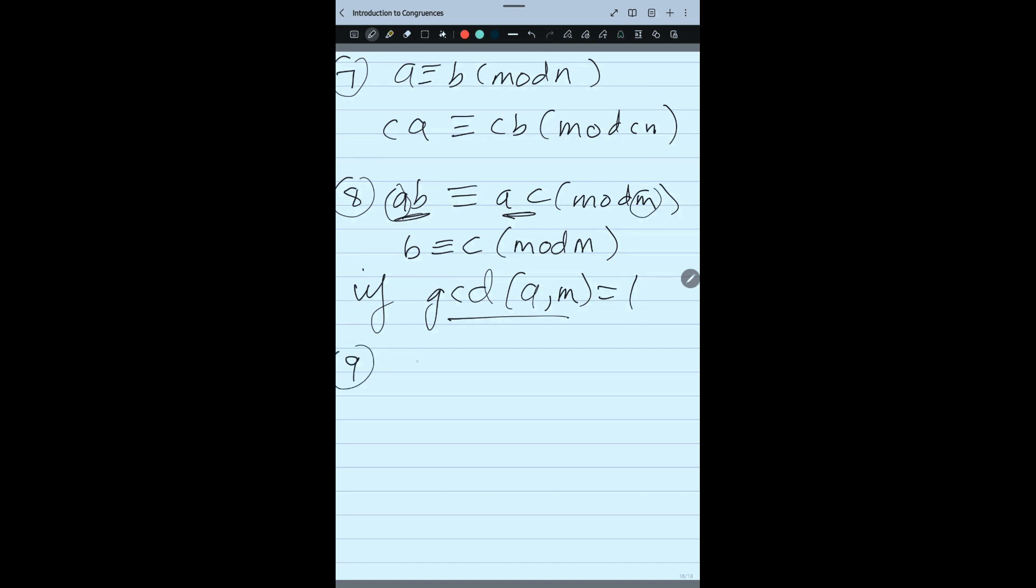Then only you can. Also the 9th property is A congruent B mod M is there, suppose. And if suppose D is the GCD of A and M, right, then I can write A by D congruent B by D mod M by D, right?